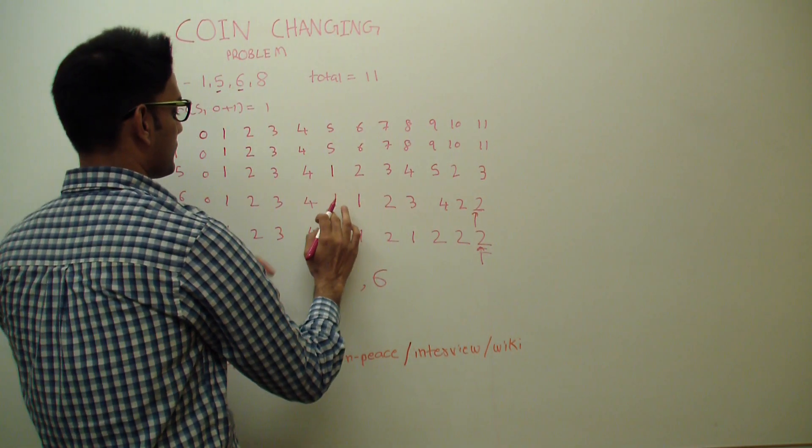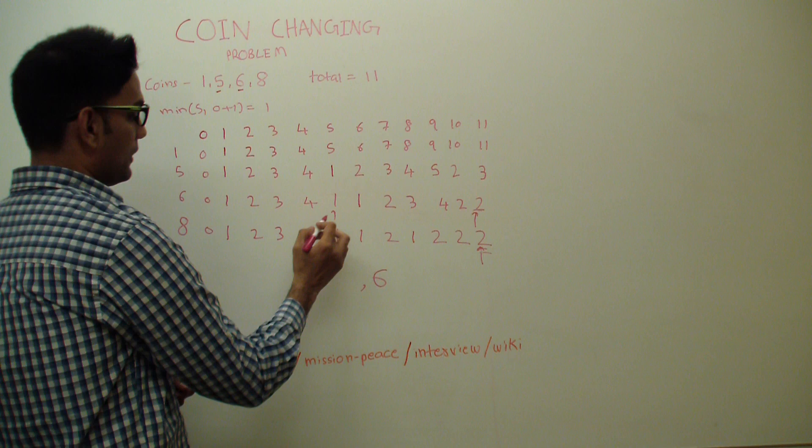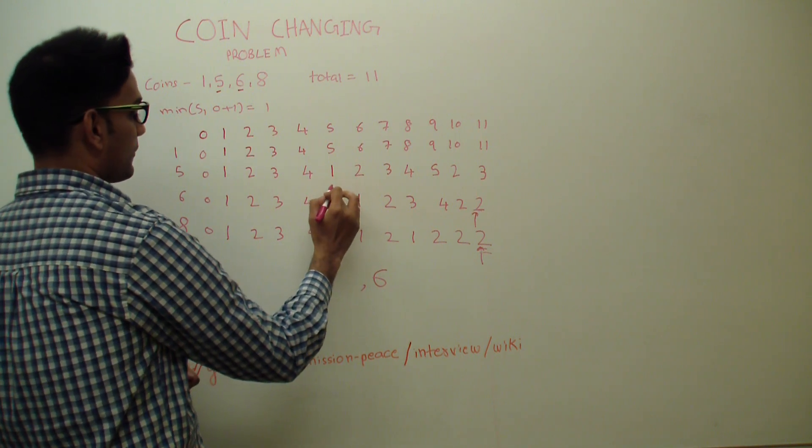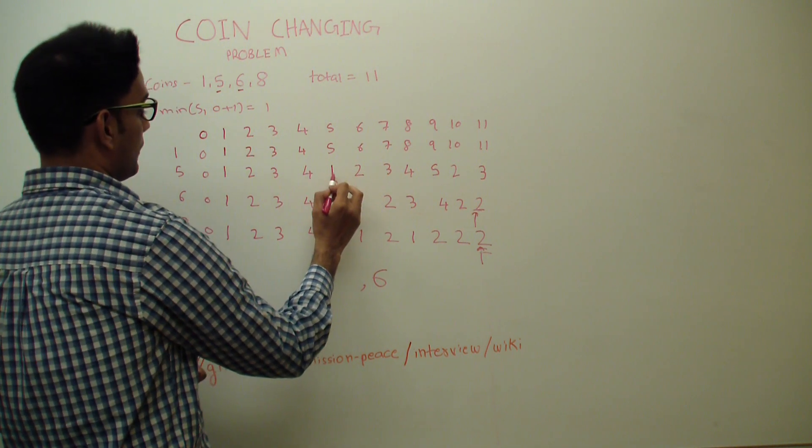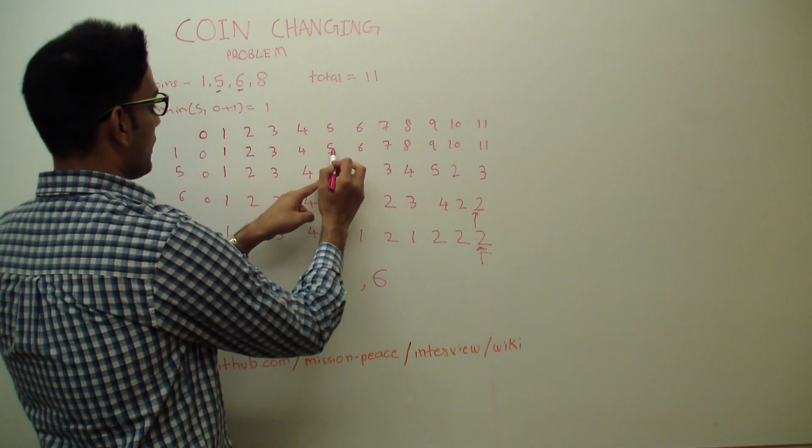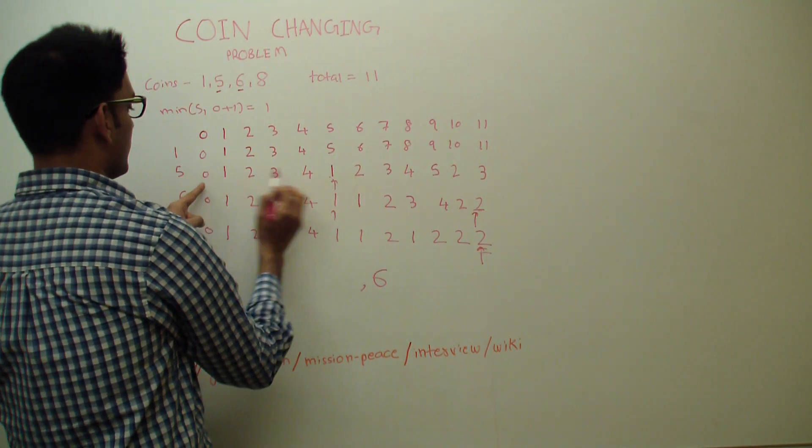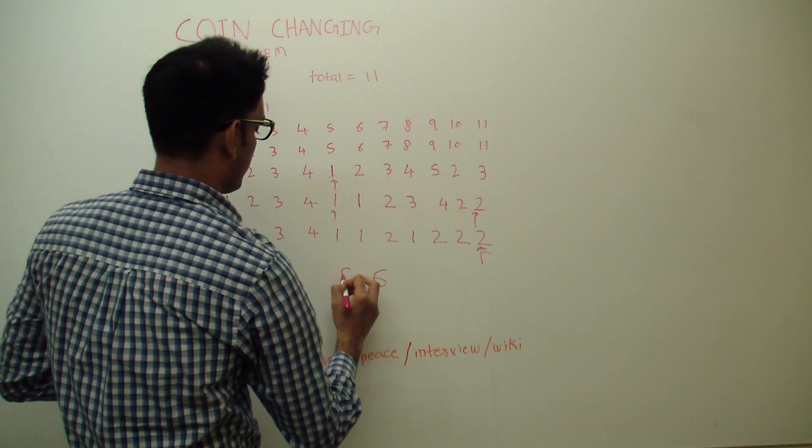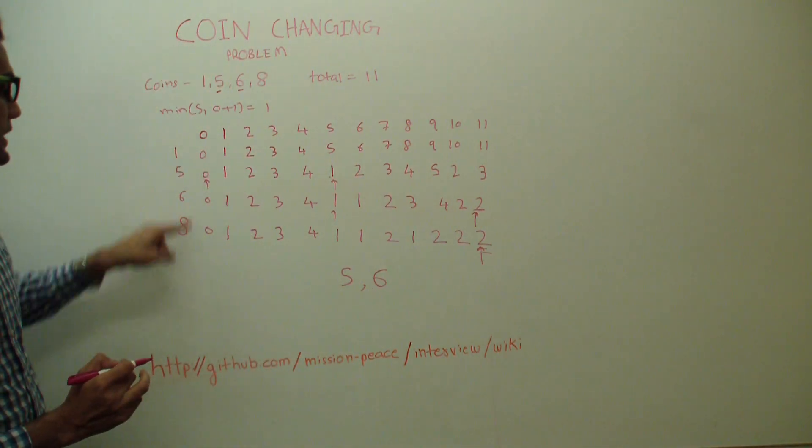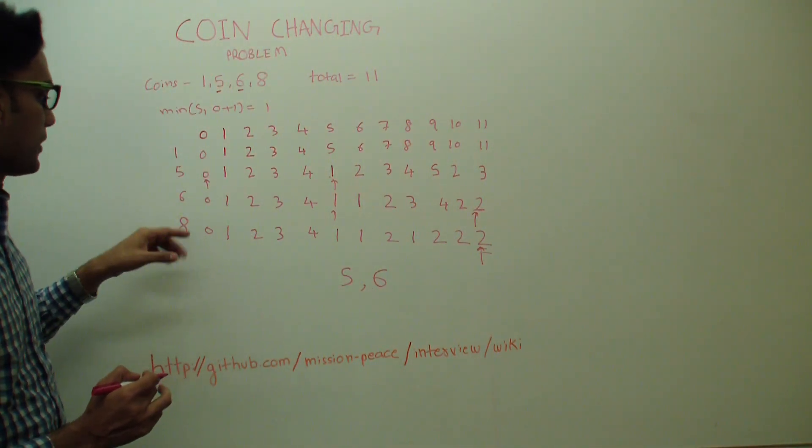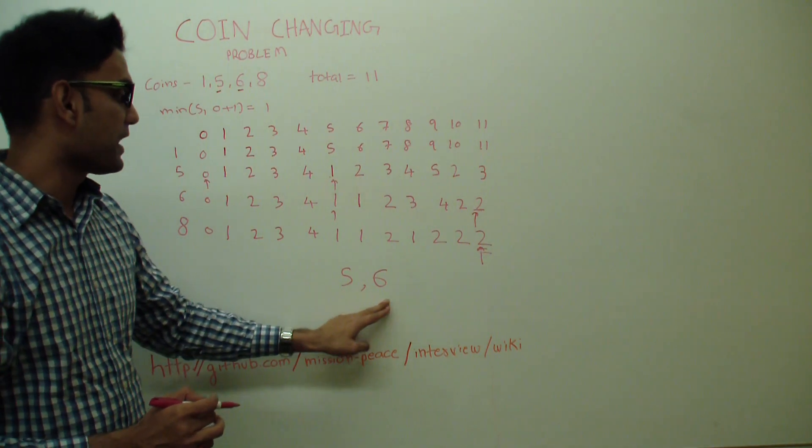1, 2, 3, 4, 5, 6. So we are here. Where is this 1 coming from? This is clearly coming from the top so we go here. Where is this 1 coming from? This 1 is not coming from the top. So we go back 5 steps here and 5. And as soon as we reach the 0th column we are done. So our answer is 5 and 6.